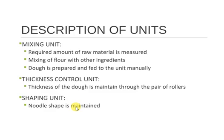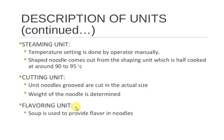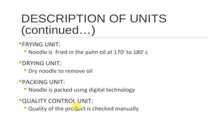The requirement of raw material is measured. Mixing of flour with other ingredients — dough is prepared and fed to the unit manually. In the thickness control unit, the thickness of the dough is maintained through a pair of rollers. In the shaping unit, the noodle shape is maintained. In the steaming unit, temperature setting is done by the operator manually, and the shaped noodle comes out from the shaping unit half-cooked at around 90 to 95 degrees Celsius. In the cutting unit, noodle groups are cut to actual size and weight is determined. In the flavoring unit, soup is used to provide flavor.